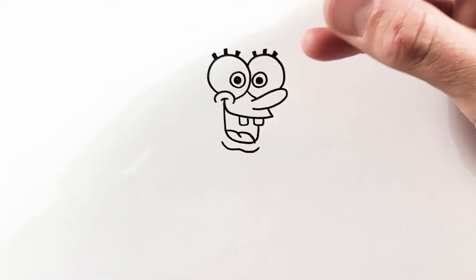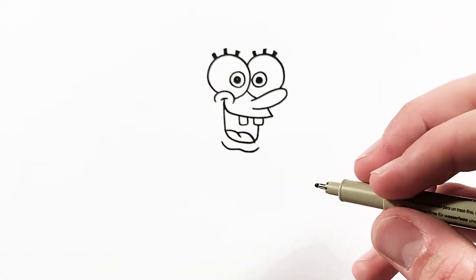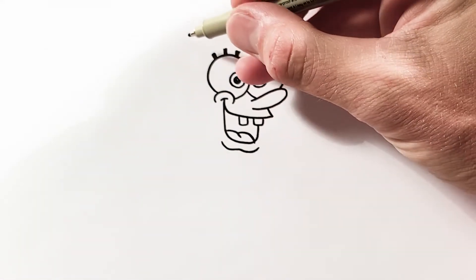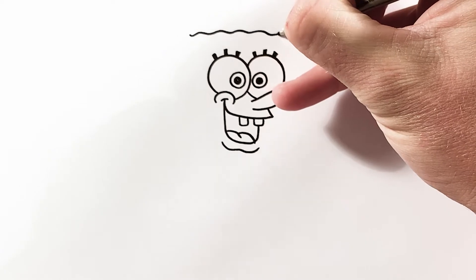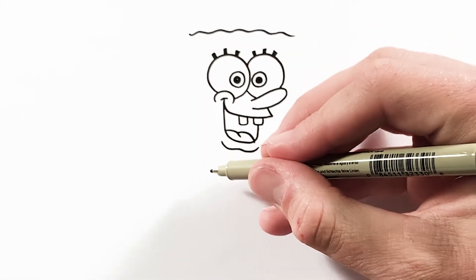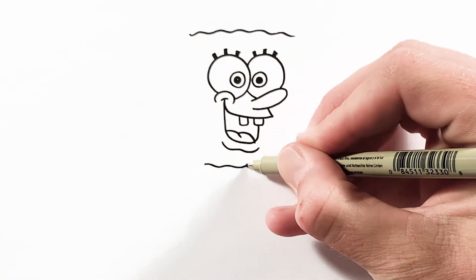SpongeBob's face is floating in the middle of his head so it's hard to know exactly where to put the lines that determine the outside of his head. You kind of have to eyeball it and it's one of those things that you get better at with time.